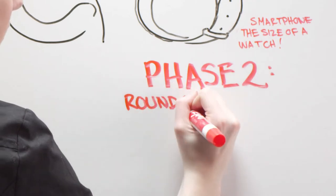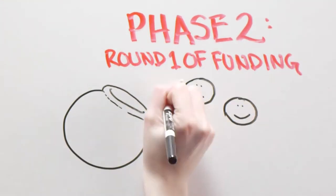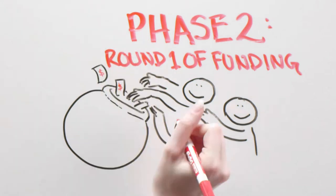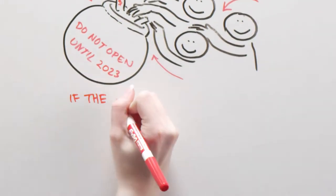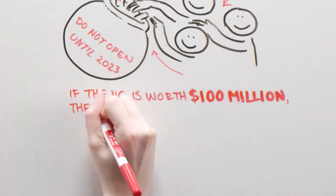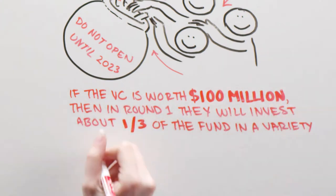Phase 2: Round 1 of funding. VCs start when a group of people agree to put money in a pot and not see returns for 10 years. If the VC is worth $100 million, then in round 1 they will invest about one-third of the fund in a variety of companies.